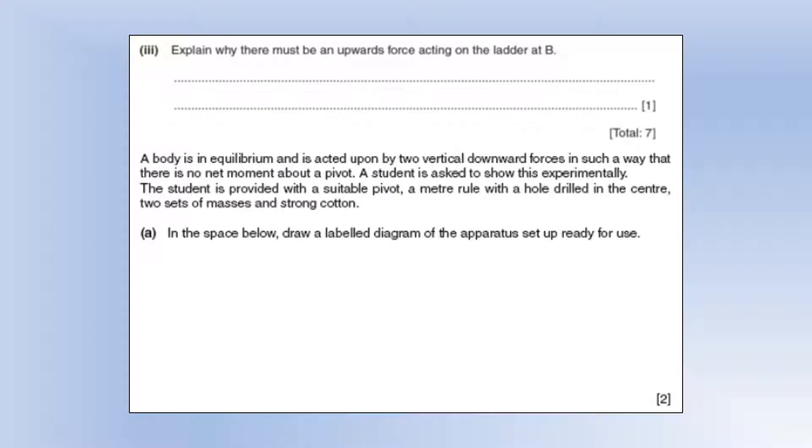Explain why there must be an upward force acting on the ladder at B. Well, if you think about the scenario at the moment in the vertical direction, we've only got the weight force of the object, which is currently unopposed. So if there's not an upward force at B, there would be a resultant force downwards and the ladder would accelerate into the floor. But it's not, so there must be an upward force at B.